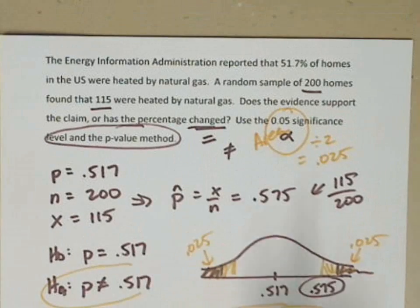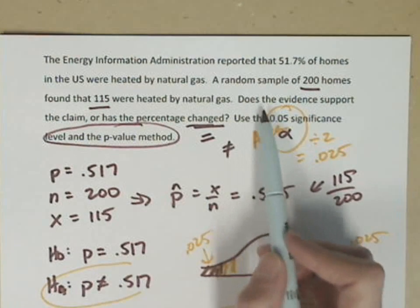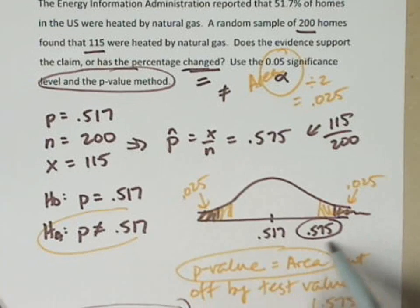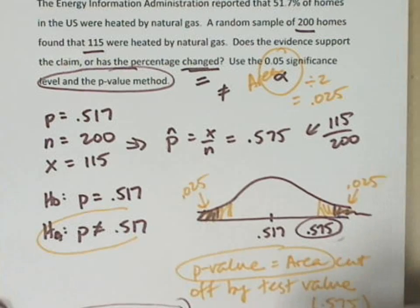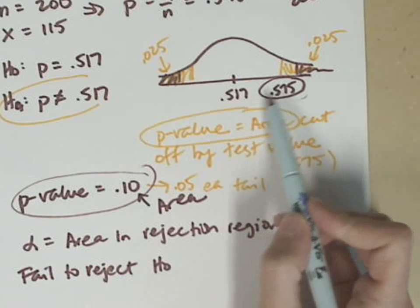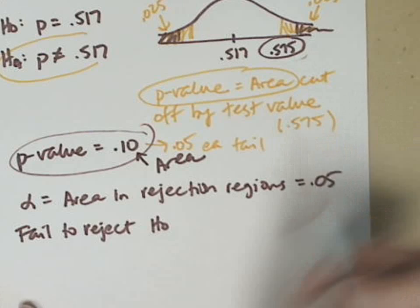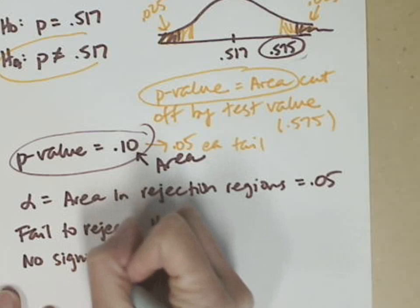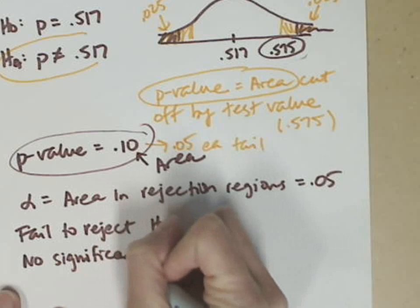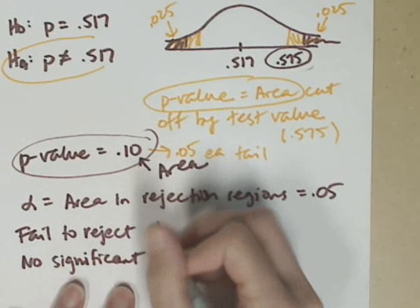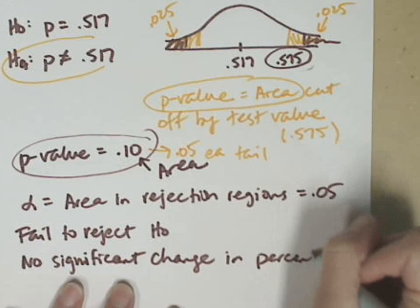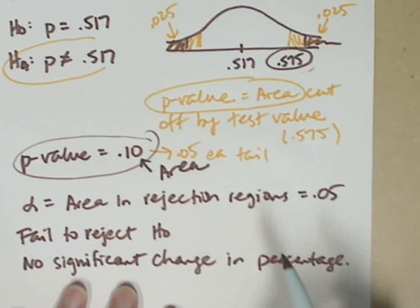Our last step is to answer the question given. Does the evidence support the claim or has the percentage changed? We did not show a significant difference. Since my p-value area was bigger than the rejection region area, I am not significantly different. So has it changed? No, we didn't show that it changed. So we'll say no significant change in the percentage.